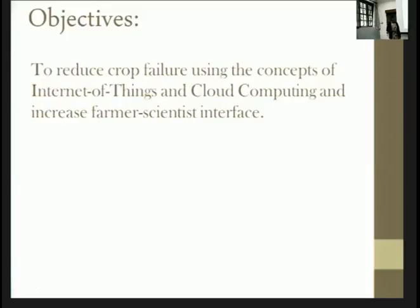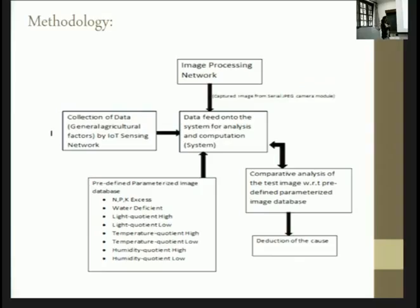The objective of our project is to reduce crop failure using IoT and cloud computing and increase farmer-scientist interface. We have not yet concentrated on the cloud computing part of it. We are still trying to achieve the Internet of Things part of the project. Basically, what we do here is we sense the plant. We take in environmental conditions, we take images of the plant, and then we compare it with a predefined database. The plant that we have chosen is called Philodendron. It's an ornamental show plant for just testing purposes. This plant shows us quick results, that is why we have chosen this plant.